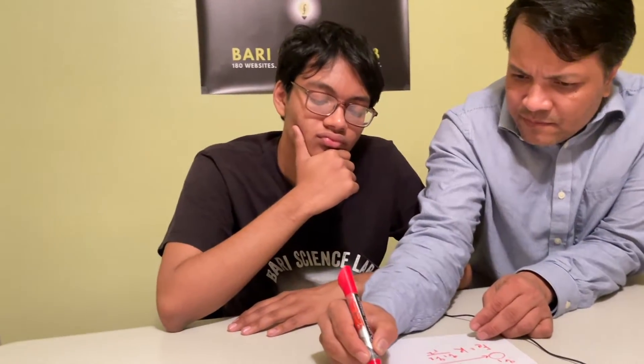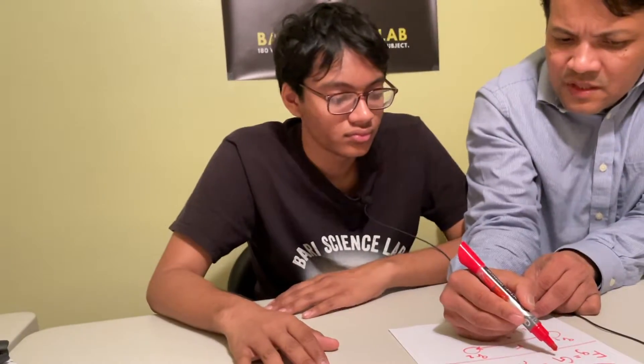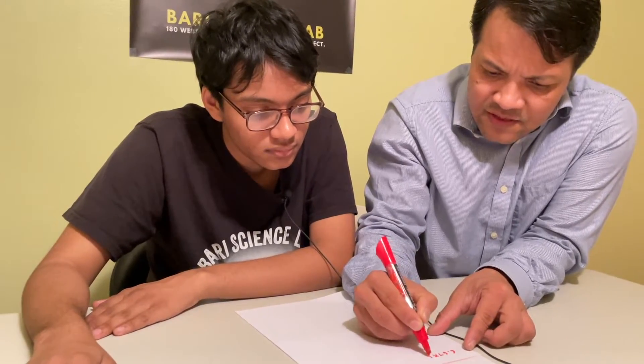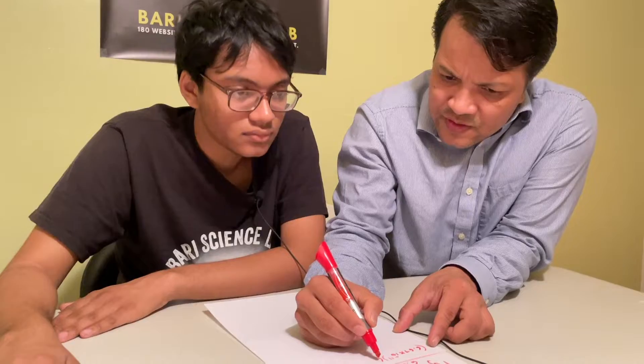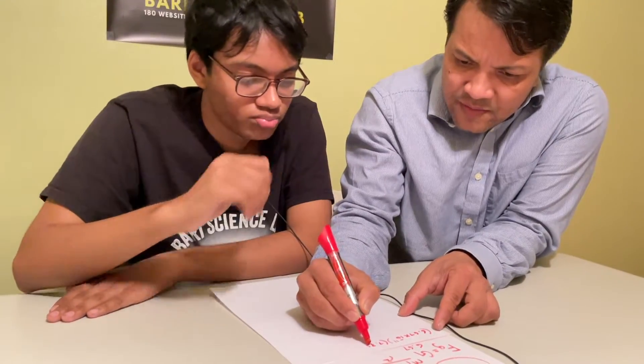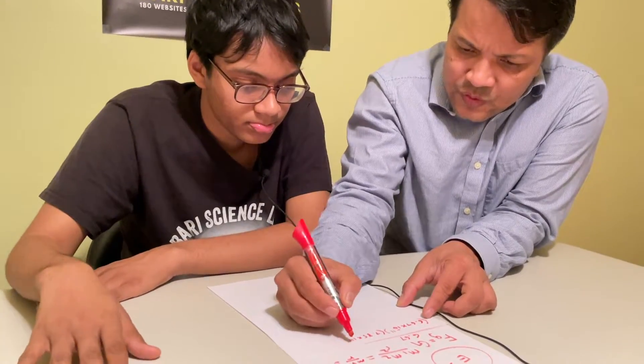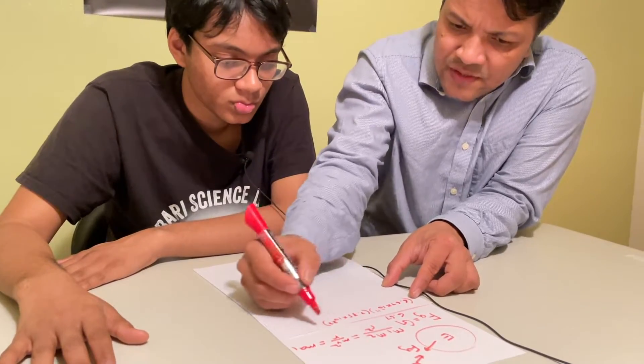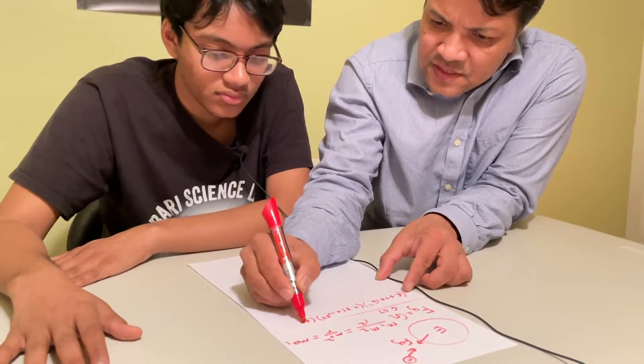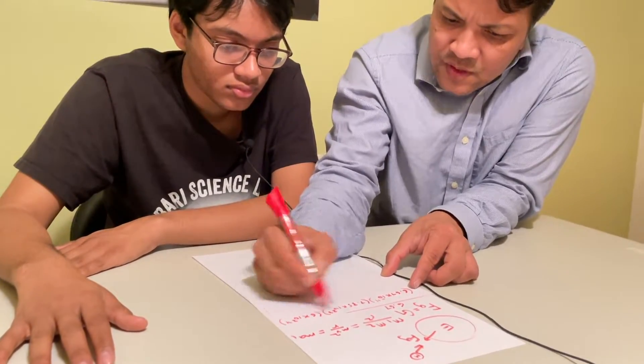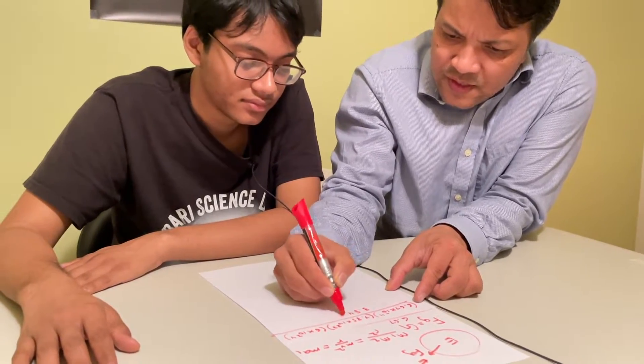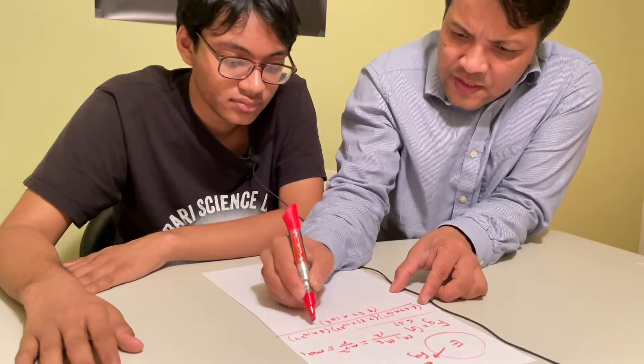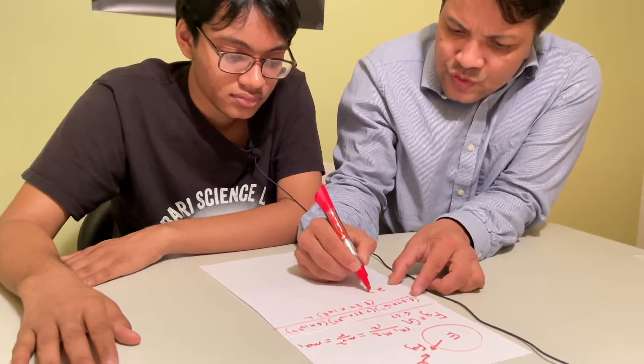For example, G equals 7 times 10 raised to negative 11, the mass of the moon is 7.35 times 10 raised to 22, the mass of the earth is 6 times 10 raised to 24, the distance between the moon and earth is 384,000 kilometers. That's right, and that gives you 2 times 10 raised to 20 newton.